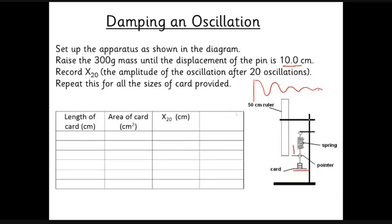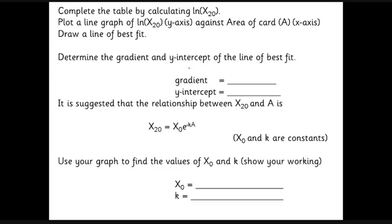The amplitude is going to die away and we're looking for the size of the 20th oscillation. So we're not analyzing this graph of amplitude against time - we're just counting the 20th oscillation to see how big it is, and we're changing the area of the card. You don't need to know the details - it's just a good example to do a bit of analysis using logs, because these oscillations are decaying in an exponential way. We measured x₂₀, the amplitude after 20 oscillations, and we measured the area of the card.